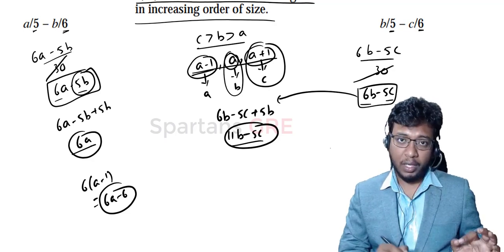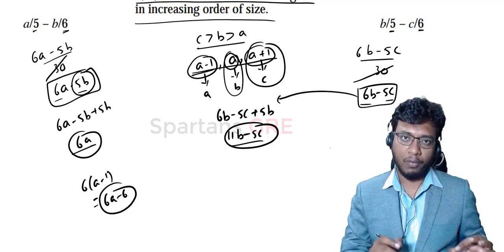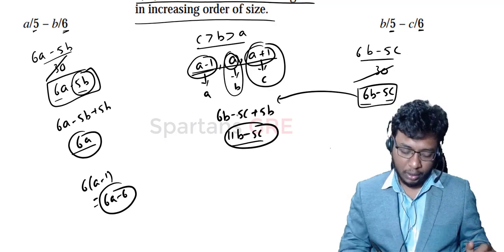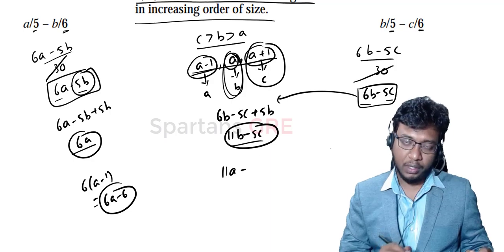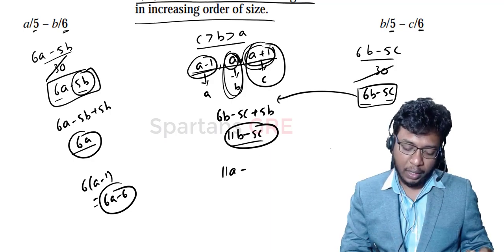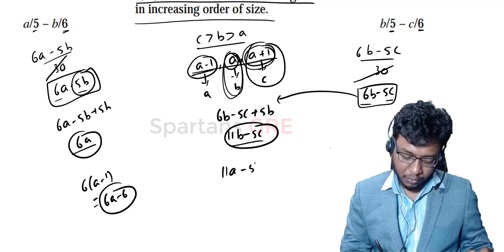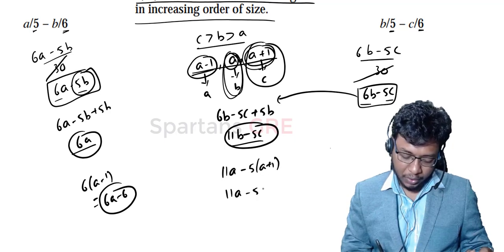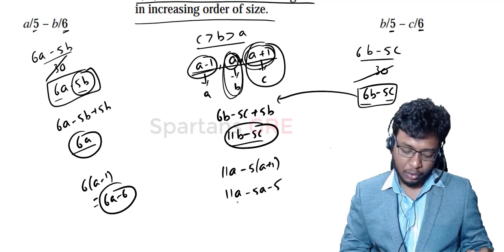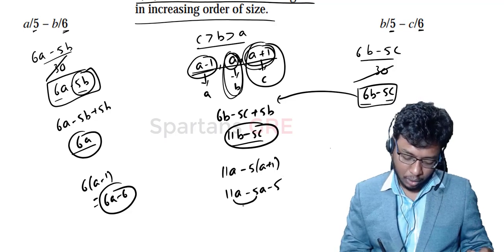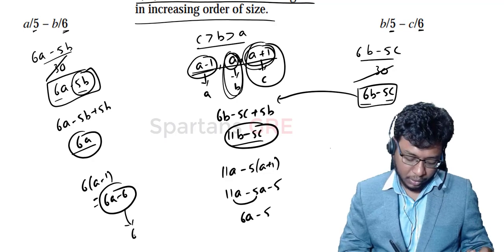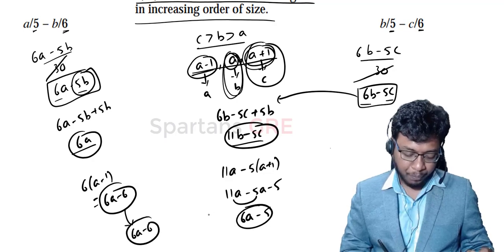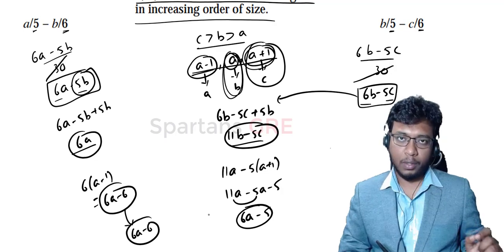So converting B to A gives 11A, and for C I substitute A+1: 11A − 5(A+1) = 11A − 5A − 5 = 6A − 5. So quantity A is 6A − 6 and quantity B is 6A − 5. Earlier we had three variables; now both expressions are in a single variable A.